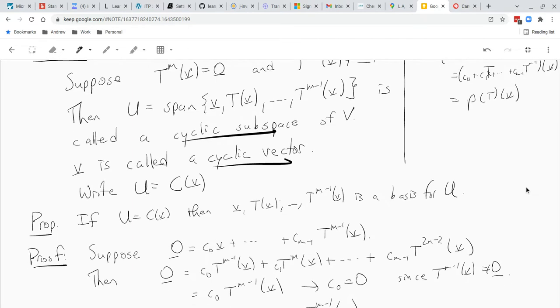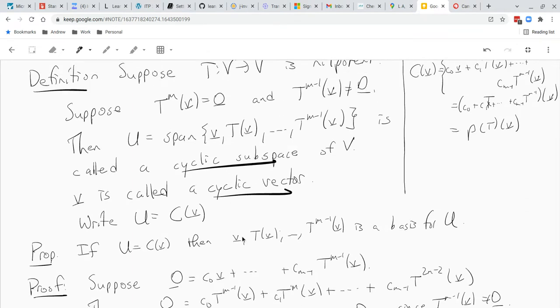Okay, and so really the key is that everything in the cyclic subspace you get from v just by applying polynomials of t. Okay, and our first proposition is that if we have a cyclic subspace, like a cyclic vector v, then these elements, they form a basis for u, or a basis for c of v. Okay, clearly, by definition, they span, that's what we put in the definition, but this proposition says that they're also linearly independent, so that they're a basis.